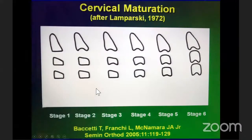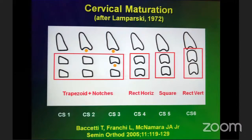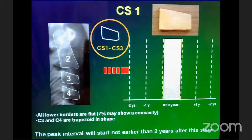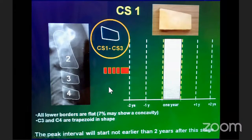Don Lamparski in 1972 used cervical vertebrae 2, 3, 4, and 5, whereas McNamara simplified it to just vertebrae 2, 3, and 4. The changes are in shape: trapezoidal shapes, then notches, then rectangular horizontal, then square, then rectangular vertical. In CS1, all lower borders are flat and C3 and C4 are trapezoidal in shape — compared to cheddar cheese. In CS2, there's a notch, still trapezoidal in form, and a concavity in cervical vertebra 2.